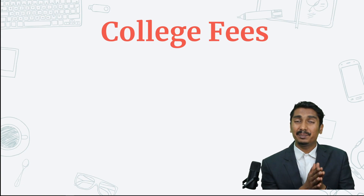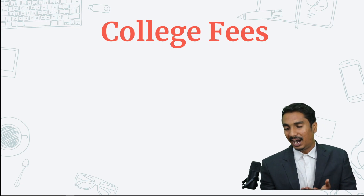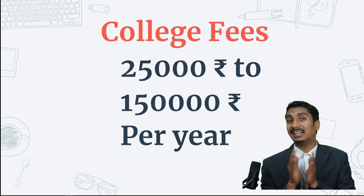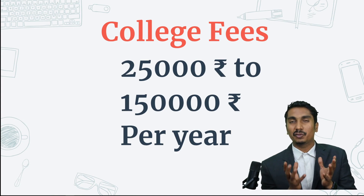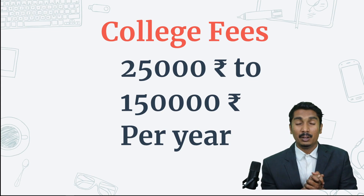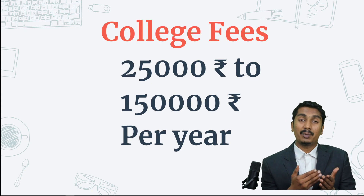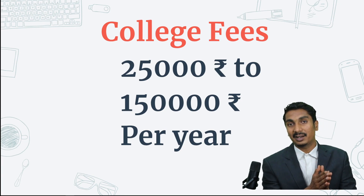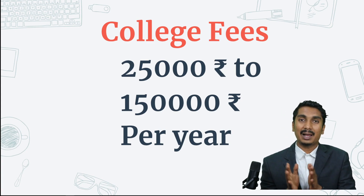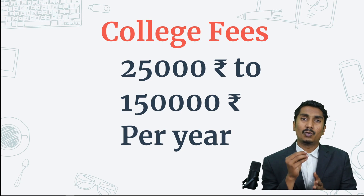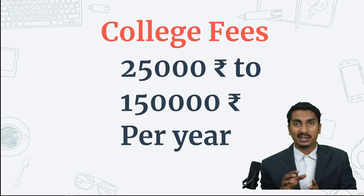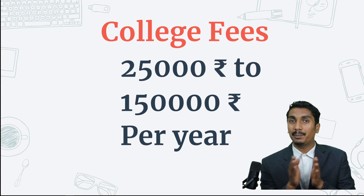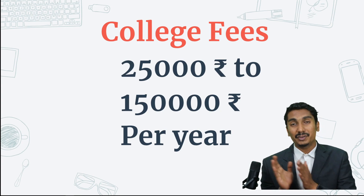What about college fees for BSCIT or BSc Computer Science? Fees vary from around 25,000 to 1,50,000 per year. Some colleges affiliated with Mumbai University charge lower fees — around 25,000 to 35,000 per year depending on facilities. Autonomous colleges like Somaiya College charge higher fees — around 1,00,000 to 1,30,000 per year. So overall, BSCIT or BSc Computer Science fees range from 25,000 to 1,50,000 per year.